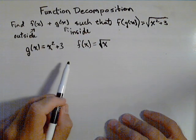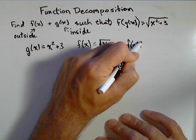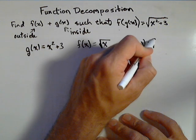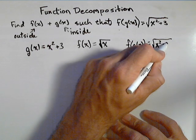Now, it's a real easy check to check your answer. You just do the composition. F of g of x, well I'm putting g of x into f of x. It's square root, because that's my outside function, of x squared plus three.